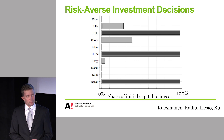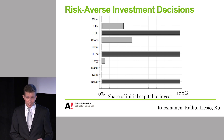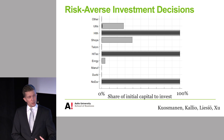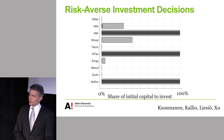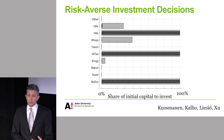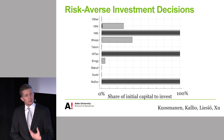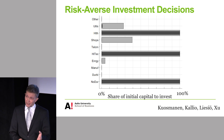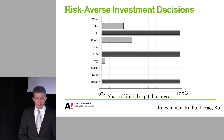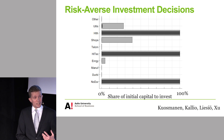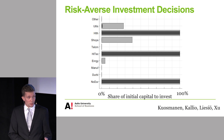A second example shows that even very modest preference information can yield qualitative decision recommendations. Here we look at how to diversify investments across 10 industries using historical US stock returns. Assuming only that the decision maker is risk averse — meaning she would be willing to accept a lower average return in exchange for less uncertainty — we find that almost half of the 10 industries should receive no investment at all, based solely on that assumption.